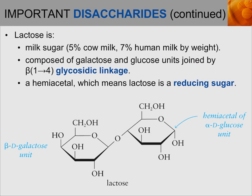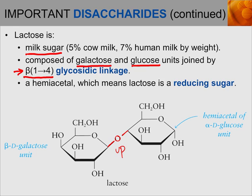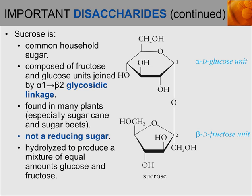Another important disaccharide is lactose, which is present in milk. Lactose is composed of galactose and glucose units joined by a beta-1,4 glycosidic linkage. Notice that the glycosidic linkage points up toward the second unit, which is why it's a beta linkage rather than an alpha linkage. Lactose is also a hemiacetal, so it is a reducing sugar and can be oxidized.